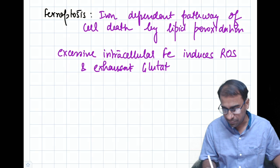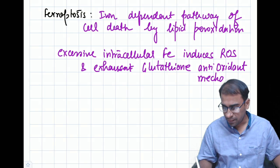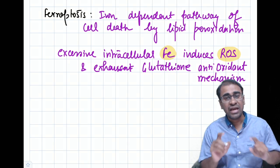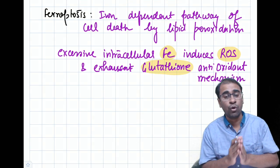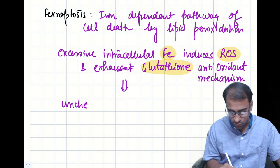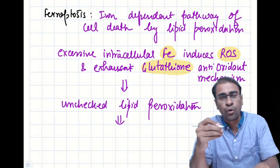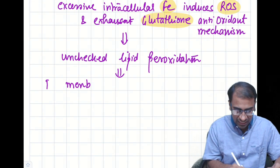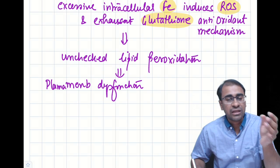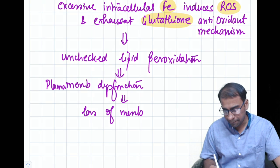This exhaustion of glutathione antioxidant mechanisms is very important. Iron induces ROS, which depletes glutathione, leading to unchecked lipid peroxidation and eventually cell death. This lipid peroxidation causes plasma membrane dysfunction — affecting lipid-protein interactions, iron transport, and membrane fluidity — resulting in a complete loss of membrane permeability.